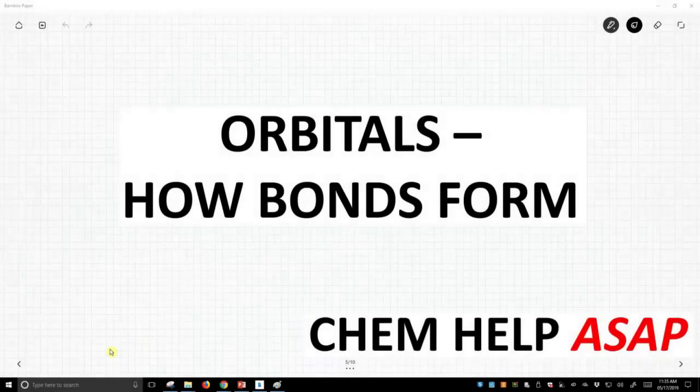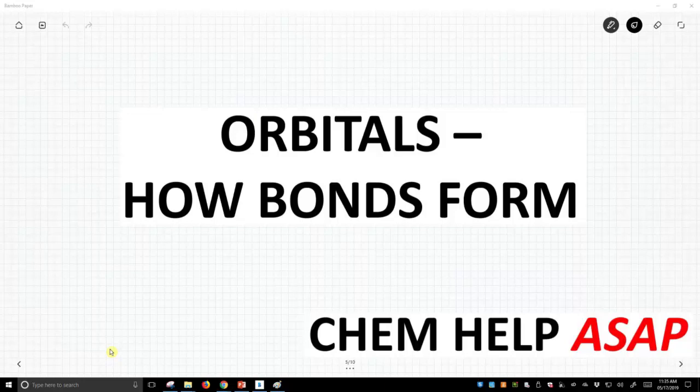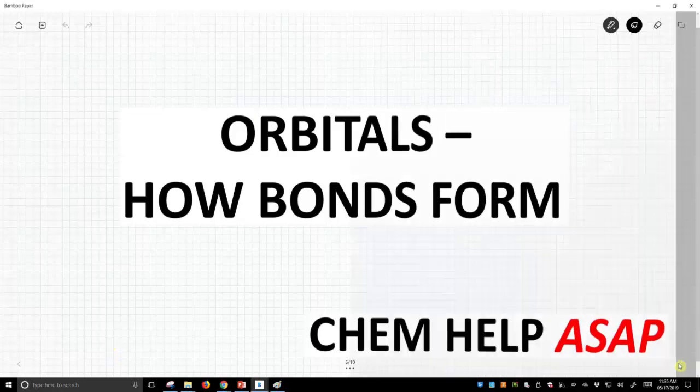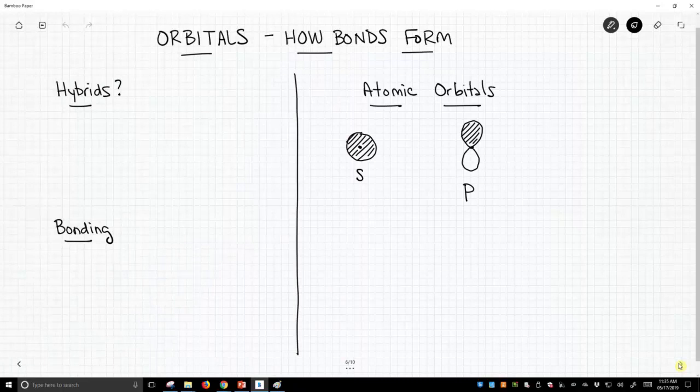Good day from Chem Help ASAP. We're now going to discuss how bonds form. To form bonds, we're going to use orbitals. Now we've discussed orbitals before when we talked about hybrids. How is this different from what we're discussing now?